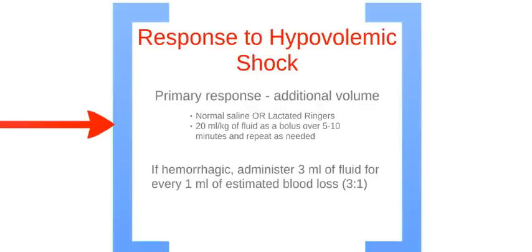The primary response to hypovolemic shock is to provide additional volume. Administer normal saline or lactated Ringer's, 20 milliliters per kilogram, as a bolus over 5 to 10 minutes and repeat as needed. If the victim is hemorrhagic, administer 3 milliliters of fluid for every 1 milliliter of estimated blood loss — a 3 to 1 ratio.